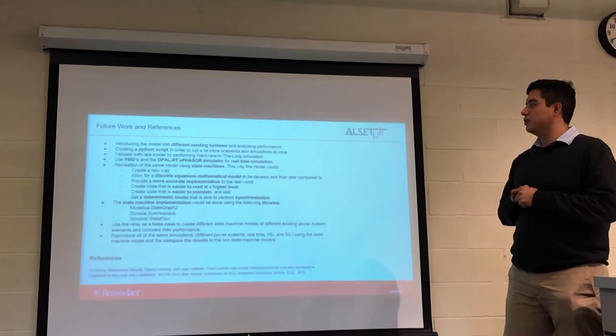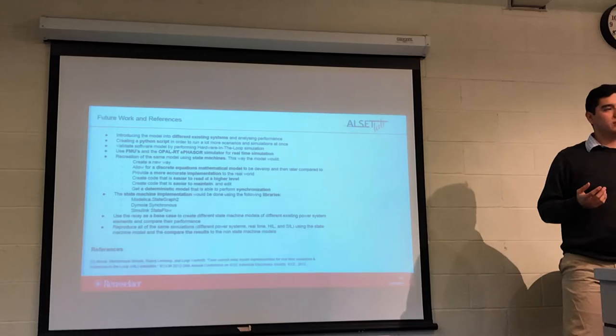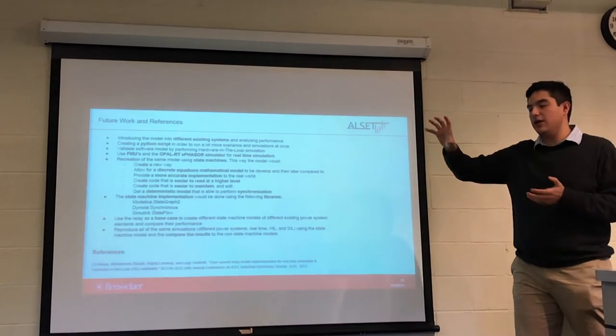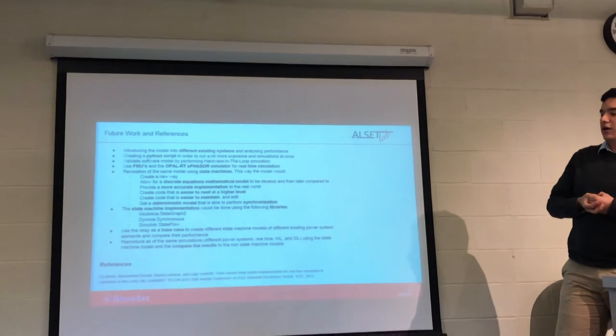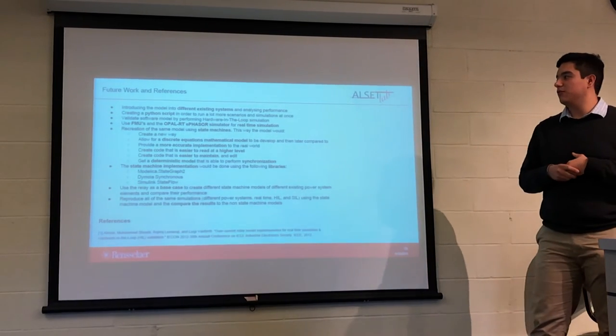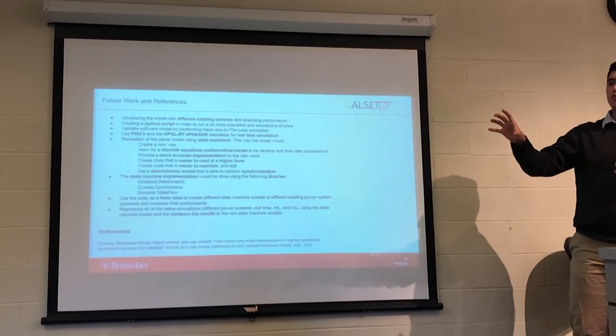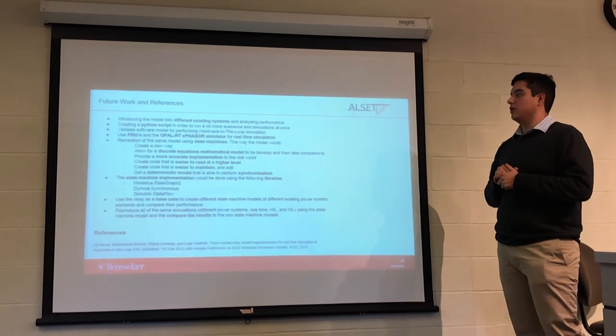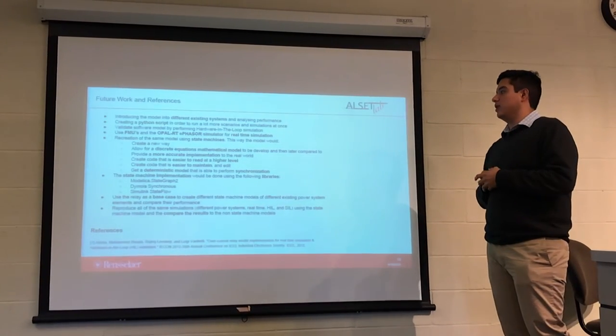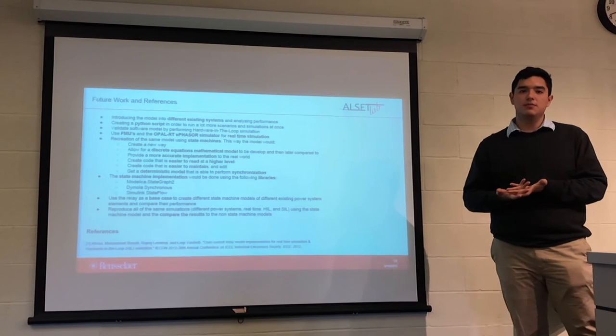Now, once this was created, the future works for this would be to create different existing power systems and test the same relay in order to see how it works. Create a Python script which will take all of these different scenarios and then run them at the same time and validate the software with hardware and loop simulation. Now, we can eventually use an FMU and the OPAL polyphase simulator for real-time simulation. Now, eventually, this model will be changed into state machines to where we would be able to create a new way of modeling the same type of electric systems and compare them. We can create now a discrete equation mathematical model and it becomes a more accurate representation of the system in the real world.